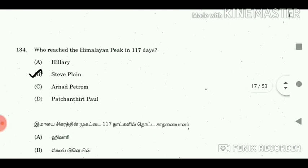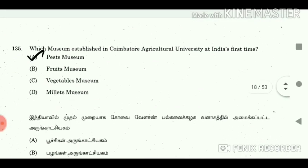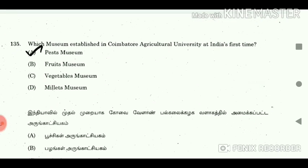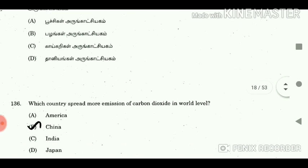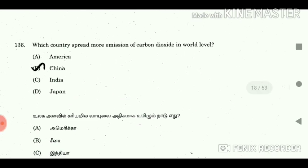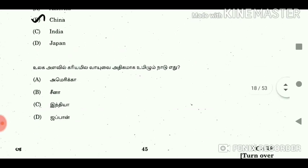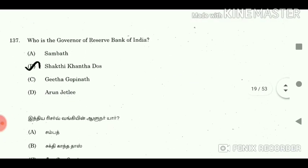Question 134: Who scaled all Himalayan peaks in 117 days? Answer: Steve Plain. Question 135: Which museum was established in Coimbatore Agricultural University as India's first? Answer: Thesis Museum. Question 136: Which country spreads the most emission of carbon dioxide at world level? Answer: China. Question 137: Who is the Governor of Reserve Bank of India? Answer: Shaktikanta Das.